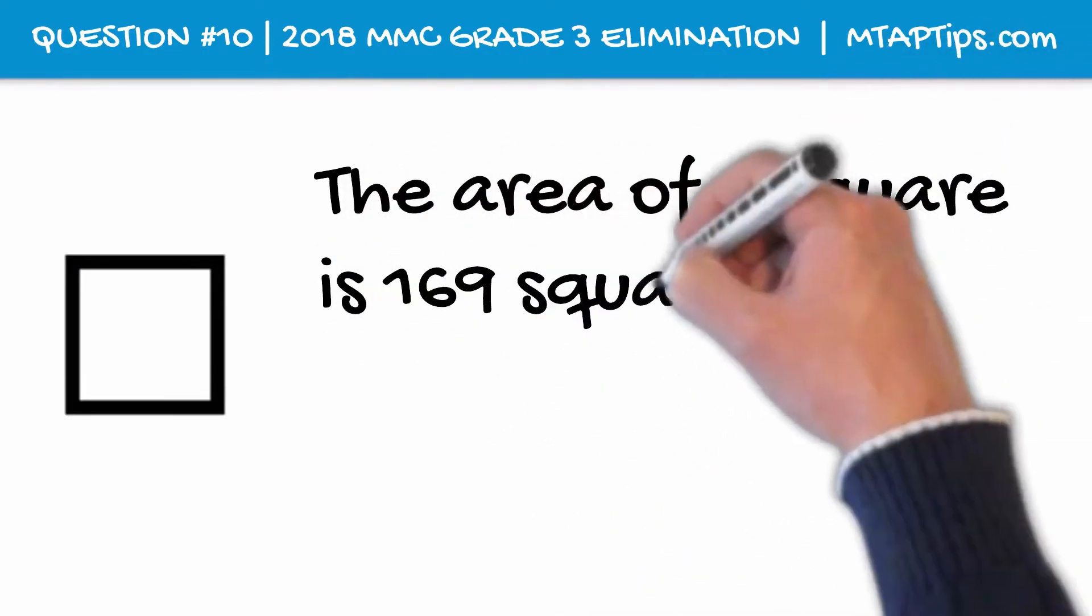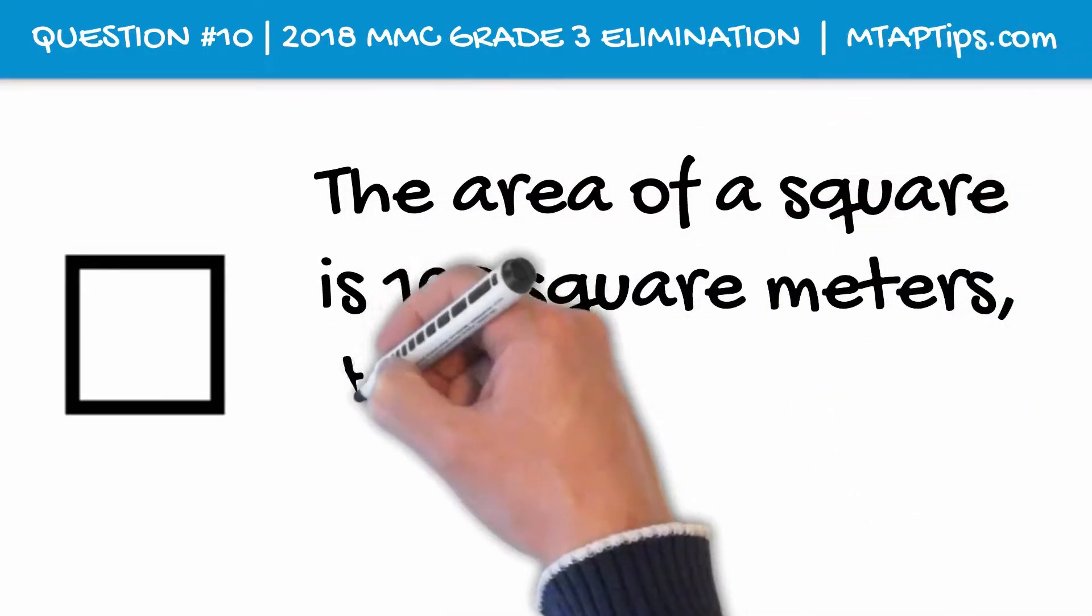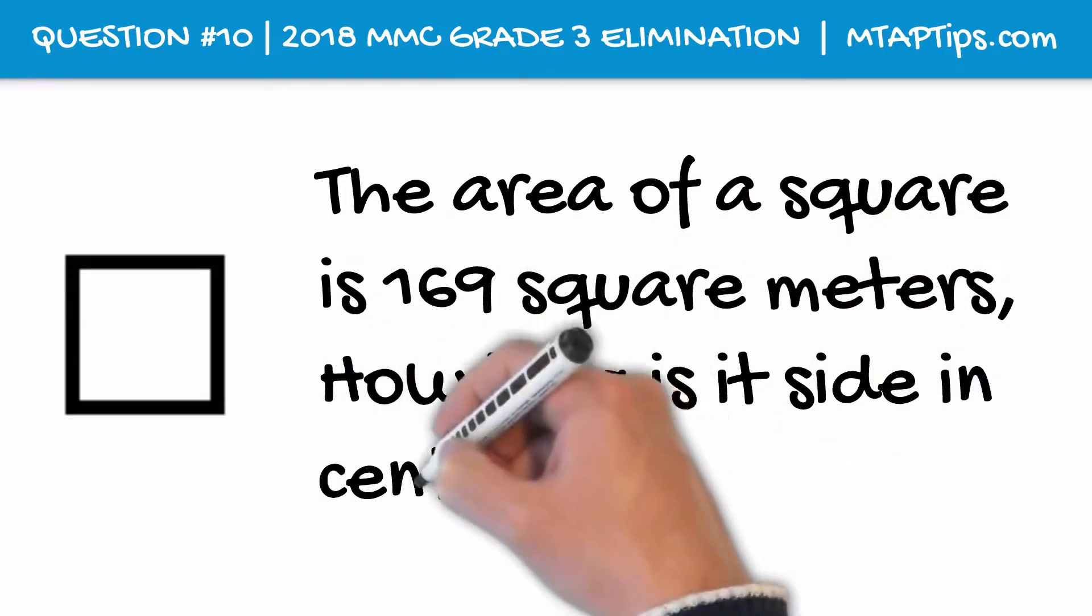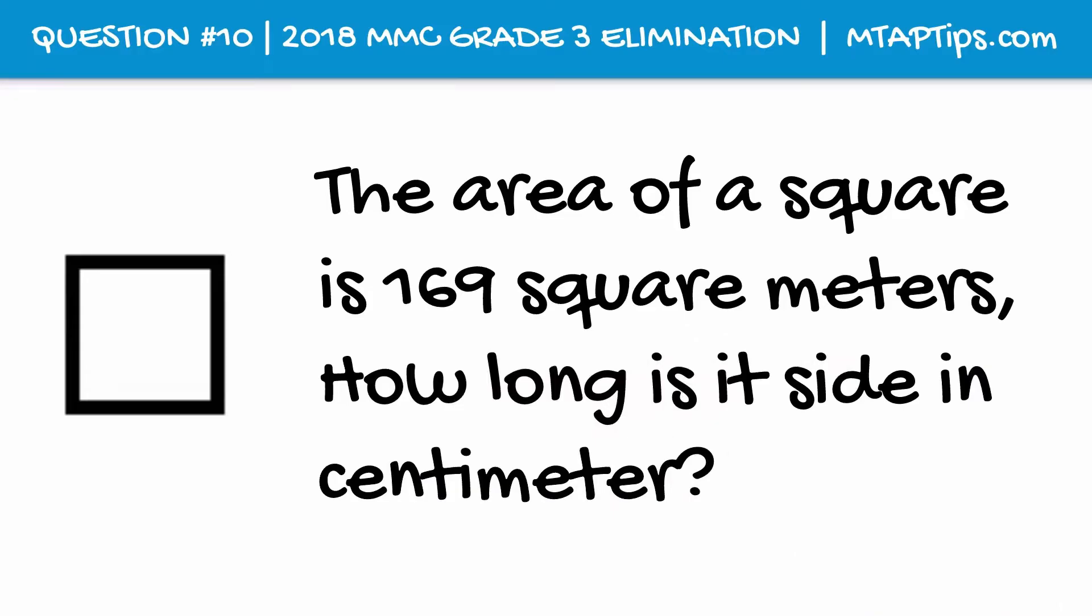The area of a square is 169 square meters. How long is its side in centimeters?